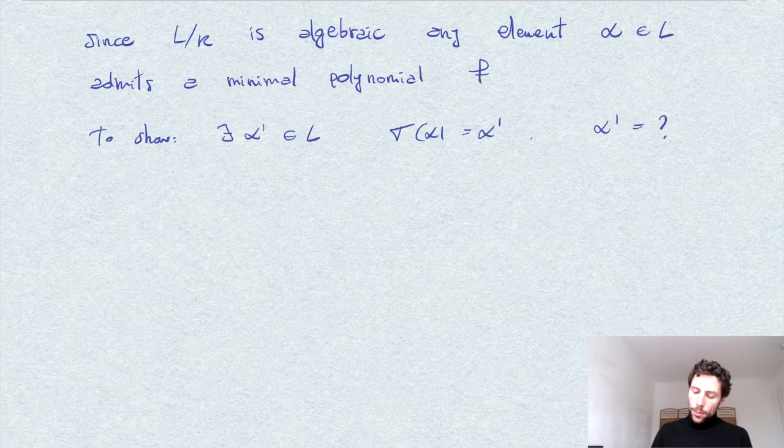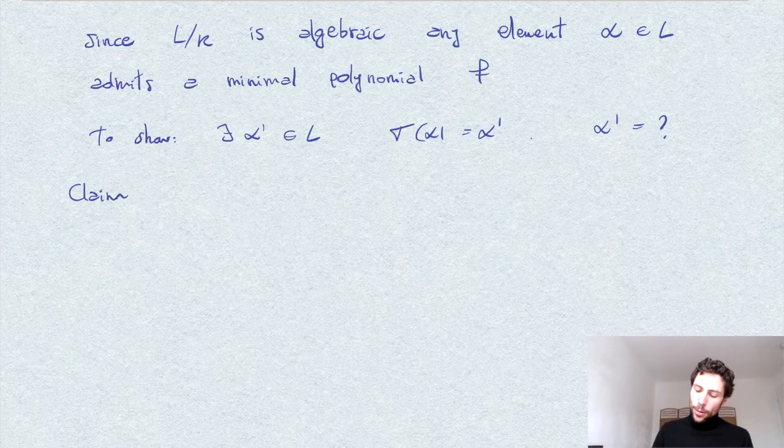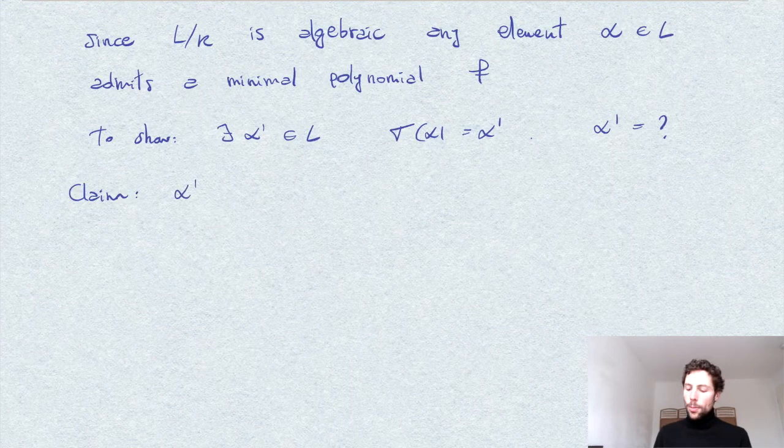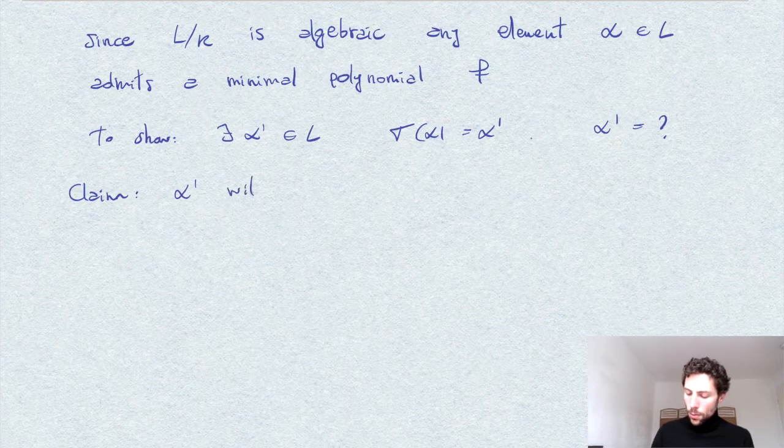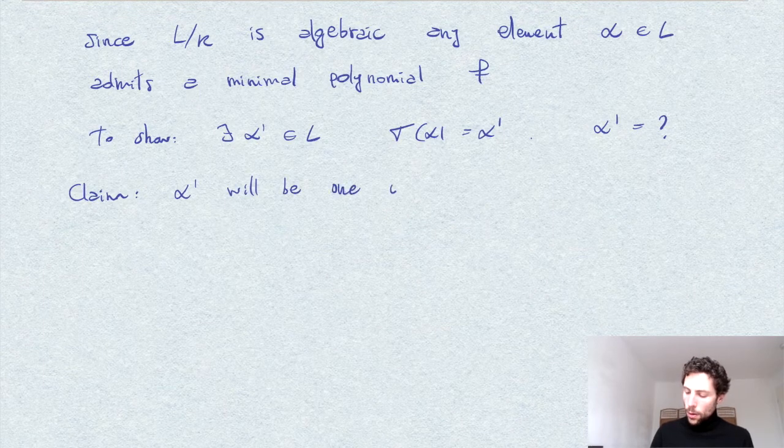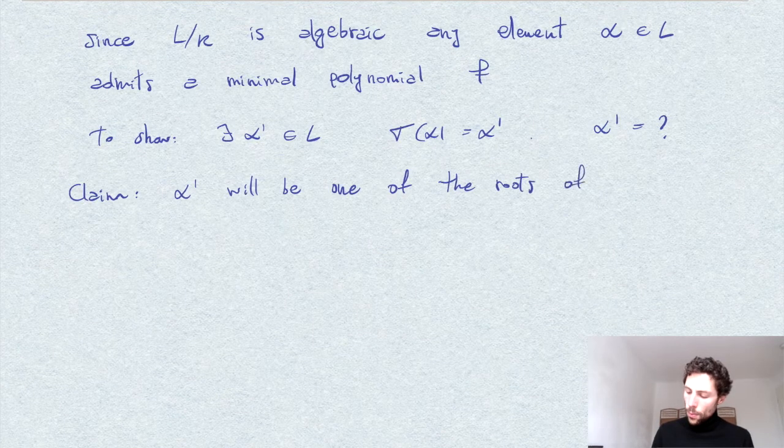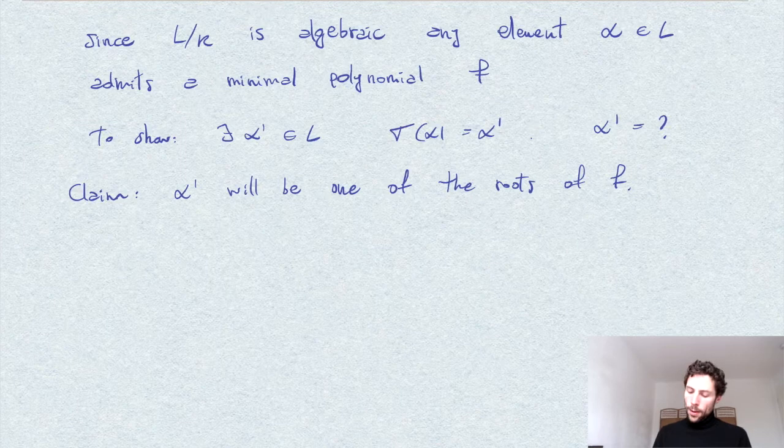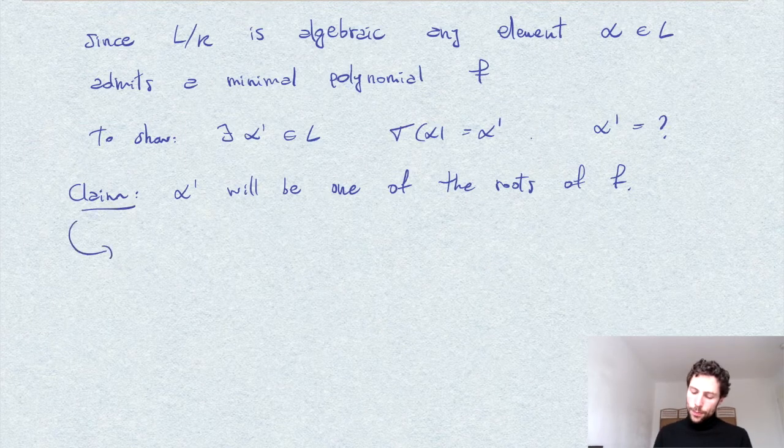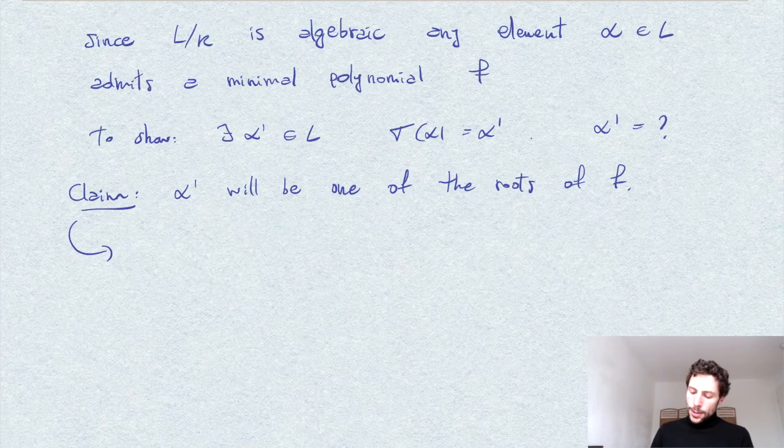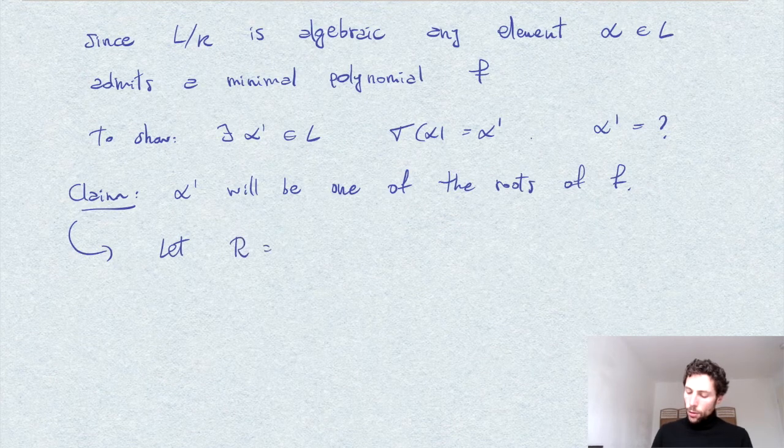And the claim here is that alpha prime is to be found between the roots of F. So alpha prime will be one of the roots of the minimum polynomial F. And the reason is as follows.